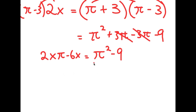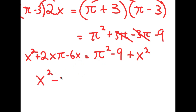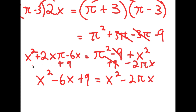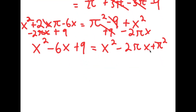From here, I'm going to add x squared on both sides. So I have x squared plus 2x pi minus 6x is equal to pi squared minus 9 plus x squared. Let me reorder this — I'm going to write this as x squared minus 6x plus 9, adding 9 on both sides, is equal to x squared minus 2pi x, subtracting 2pi x on both sides, plus pi squared.